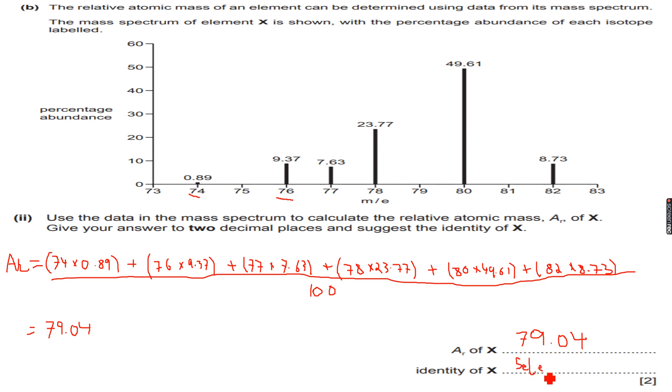And the element which has a relative atomic mass of 79.0 is selenium. So I just write selenium or Se over here. I'll write the full name but you can just write Se, selenium. You will not be penalized.